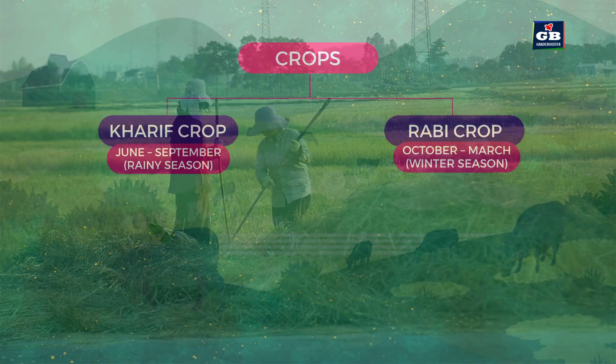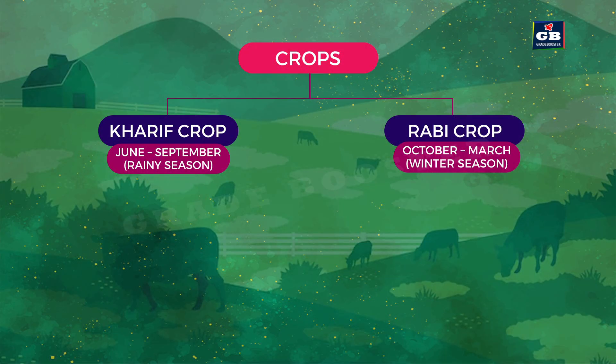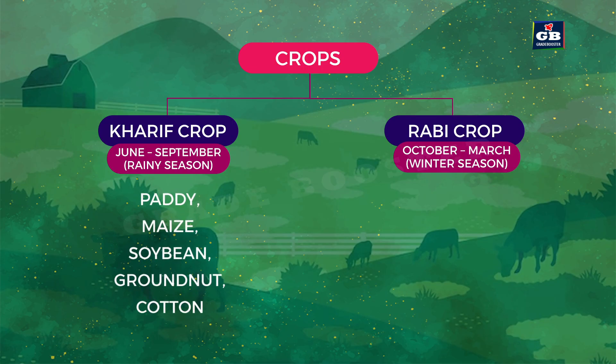Crops are classified based on the season they grow in. Kharif crops are grown in the rainy season, from June to September. Examples of Kharif crops: paddy, maize, soybean, groundnut, and cotton.